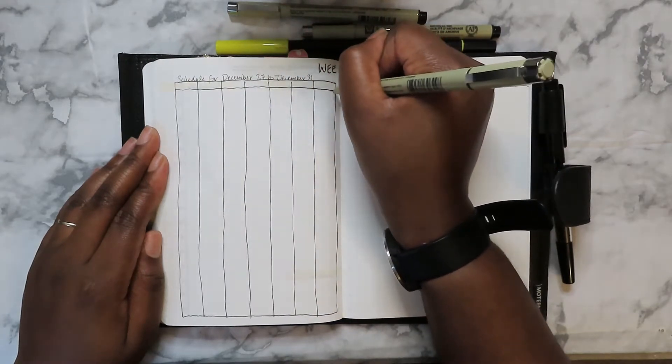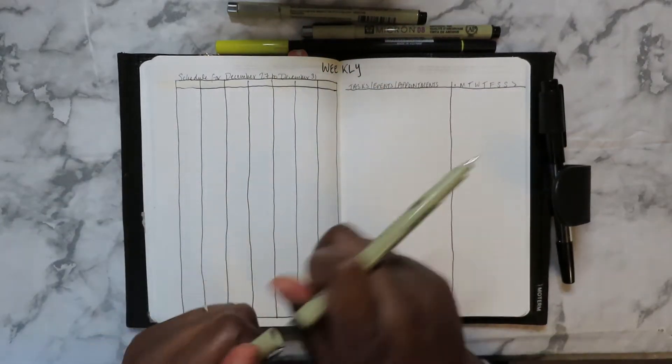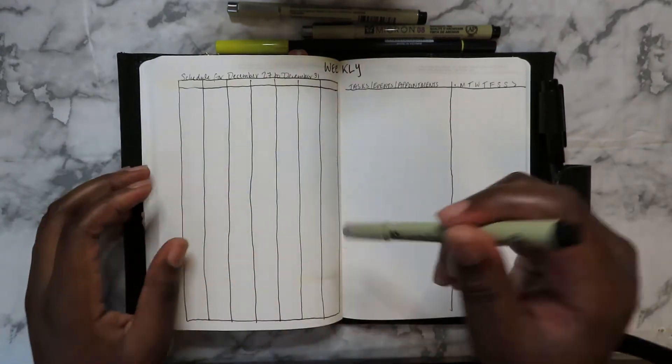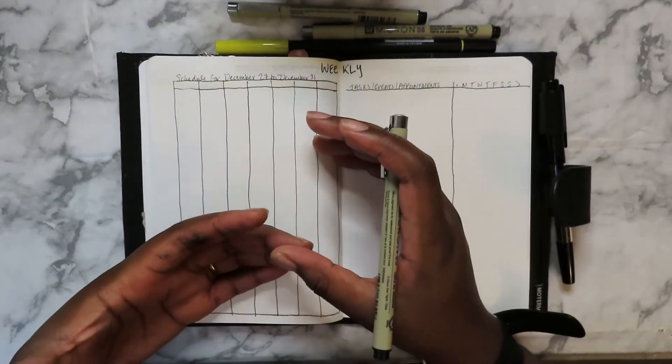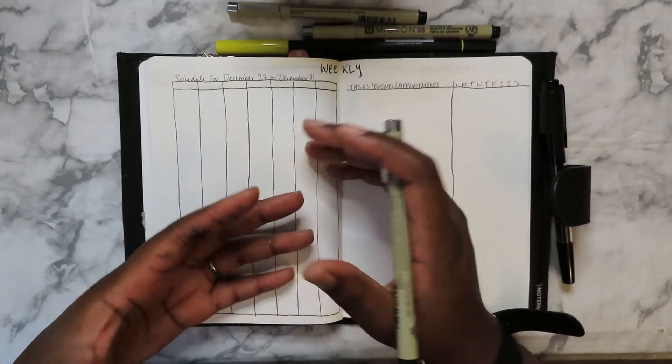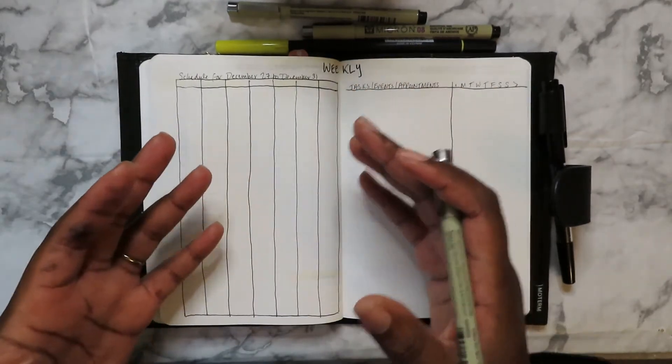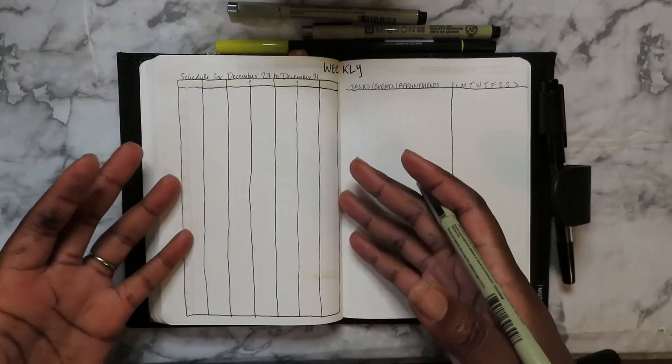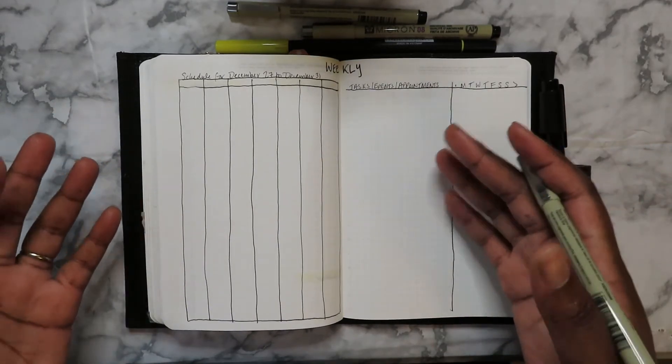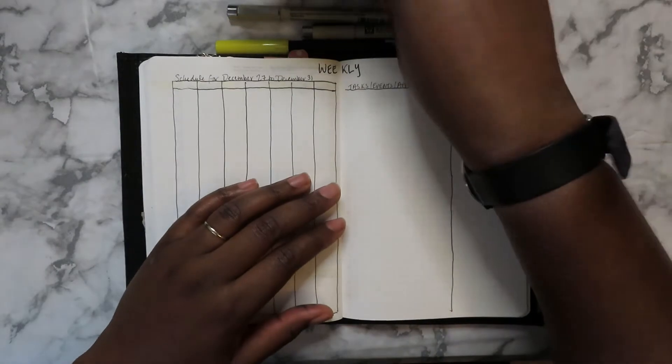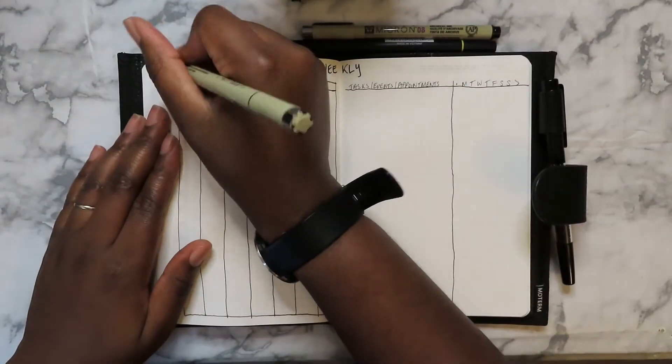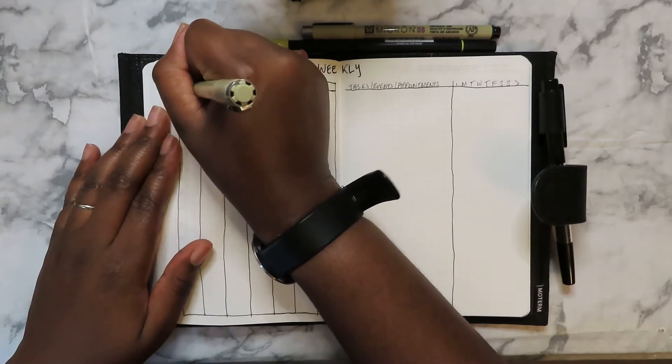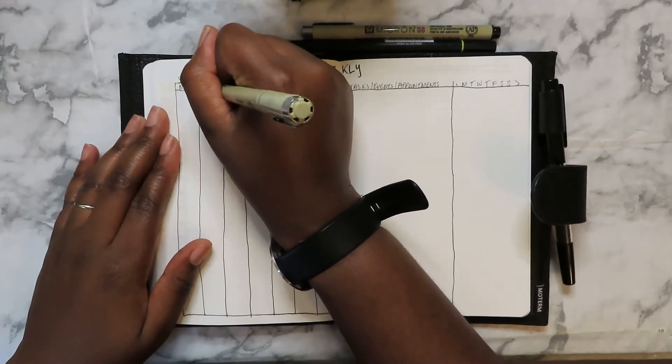It's going to be my note taker. I'm going to take notes when I have meetings and such with it, so it's going to replace my Stalogy. Like all the facets of both planners can replace my Stalogy, which is kind of like technically I can do a one-book situation where it's just my Stalogy because it could do all those things, but I have to write them out and I don't have time for that. Ain't nobody got time for that. Monday 27th, Tuesday 28th.